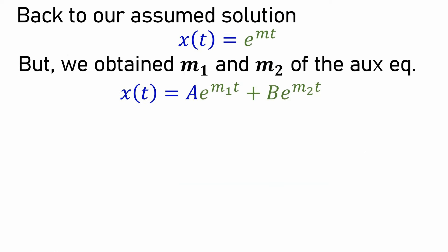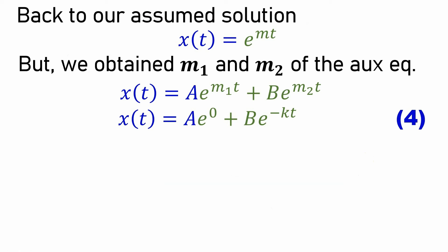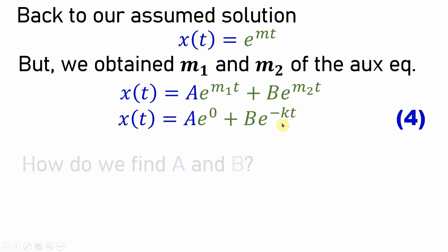We obtained two roots for the auxiliary equation, so x(t) can be expressed to capture both m₁ and m₂. The general solution is x(t) = A·e^(m₁t) + B·e^(m₂t). With m₁ = 0 and m₂ = −k, this becomes x(t) = A·e^(0) + B·e^(−kt) = A + B·e^(−kt).